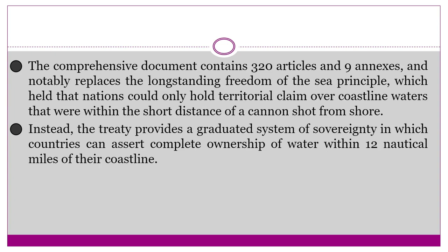The comprehensive document contains 320 articles and 9 annexes, and notably replaces the long-standing freedom of the sea principle, which held that nations could only hold territorial claim over coastline waters that were within the short distance of a cannon shot from the shore. Instead, the treaty provides a graduated system of sovereignty in which countries can assert complete ownership of water within 12 nautical miles of their coastlines.